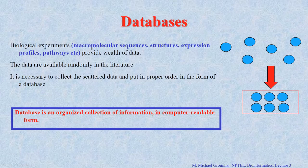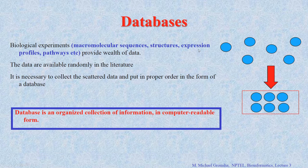Likewise in bioinformatics, the major field is biology. Biology produces a lot of experimental data — on molecular sequences and structures, expression profiles, pathways and so on. We have a wealth of data available in the literature. Experimentalists create the data and publish in journals. It is very important and necessary to collect all the information and put it together in a computer-readable form.